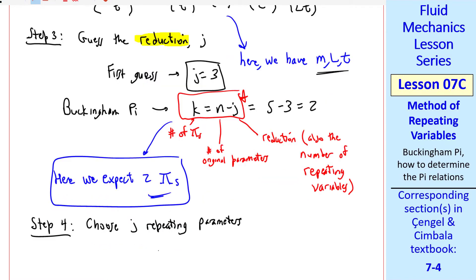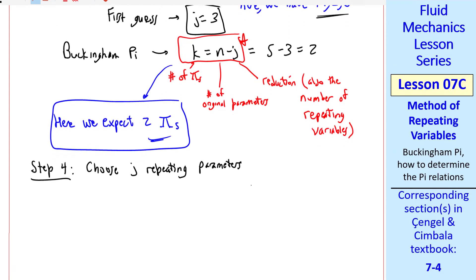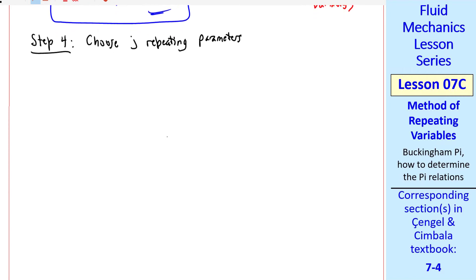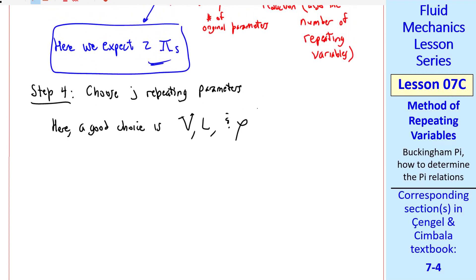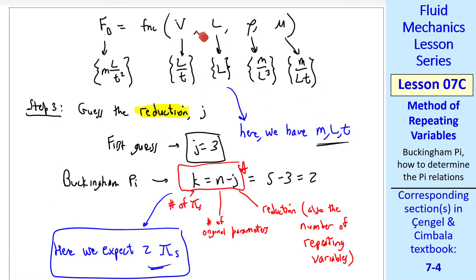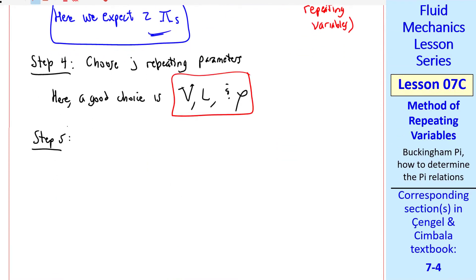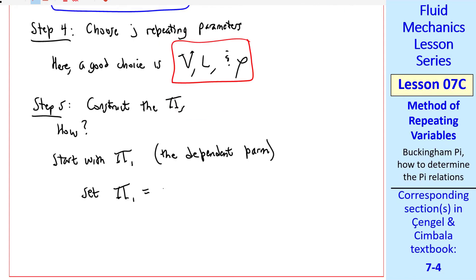Step four is to choose j repeating parameters or repeating variables. As I said, this is the most mysterious step, so make sure you study those guidelines that I showed you. Here a good choice, or I would argue the best choice, is v, l, and rho. These are simpler dimensions and more common variables than mu, as I explained previously. Now that we have our j repeating parameters, we move on to step five, which is to construct the pis. How? Well, we take each of the remaining parameters, in this case the other two, fd and mu, one by one and combine them with these repeating variables, and then force the pis to be dimensionless. I'll start with pi one, which we always choose as the dependent parameter. So we set pi one as the dependent variable in the original problem, times each of these repeating variables, raised to some exponent.